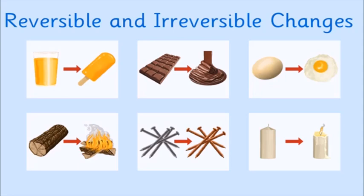Irreversible changes cannot be undone. For example, if you burn paper, you cannot make paper again from the ash. Similarly, if wood is burned, it cannot be reversed back into wood. In nature, once green chilies turn red, you cannot turn them back to green. These are examples of chemical and irreversible changes.